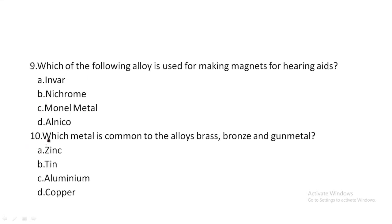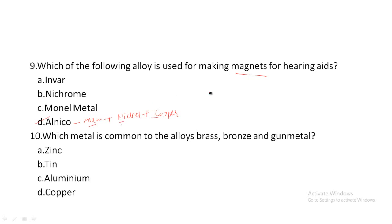Next one: Which alloy is used for making magnets for hearing aids? Option A: Invar, Option B: Nichrome, Option C: Monel metal, Option D: Alnico. So, Alnico is used for magnets in hearing aids. Alnico is an alloy of Aluminium plus Nickel plus Copper. This is the correct answer.